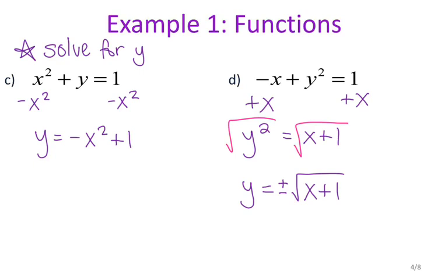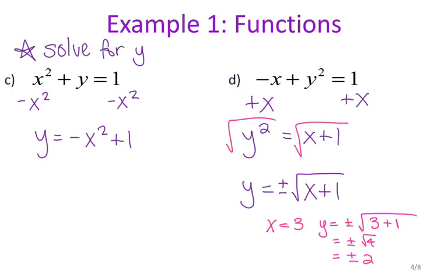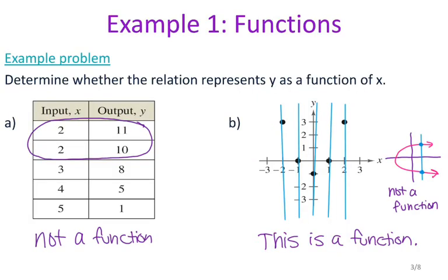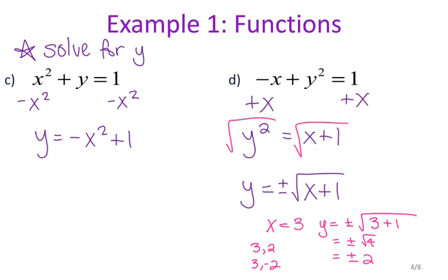Let me give you an example using letter D. Let's say x is three — if x is three and I plug it in, I get y equals plus or minus the square root of three plus one, which gives me plus or minus the square root of four, which is positive or negative two. So this three is going to go to both a positive two and a negative two. Just like in the table where my twos went to both 11 and 10, that made it not a function — so this makes letter D not a function.